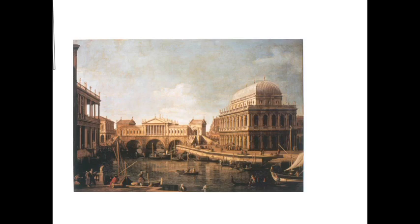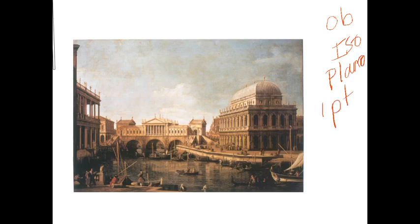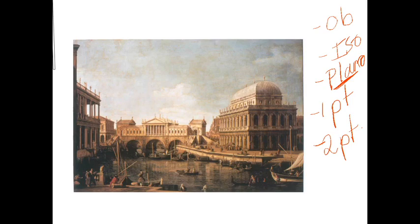You should be able to create a list of five possible modes. So I'm just going to write them down here: oblique, isometric, planometric, one-point perspective, and two-point perspective. These are the five different drawing modes you need to be able to identify. If you're not sure what any of these mean, go back and look at the videos on parallel projections and perspective projections.